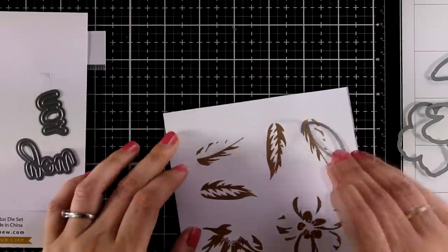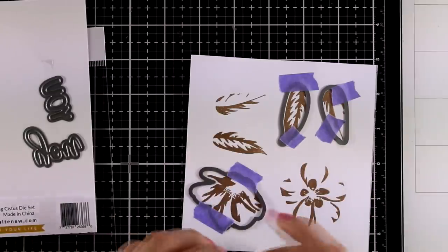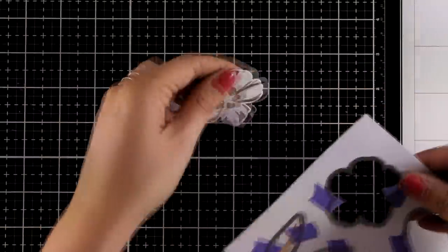And that's exactly what I'm doing here. I'm going to place the dies on top, secure them with some paper tape, run them through my die-cutting machine, and here are all my die-cuts.